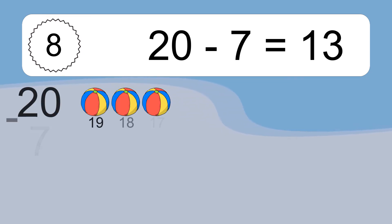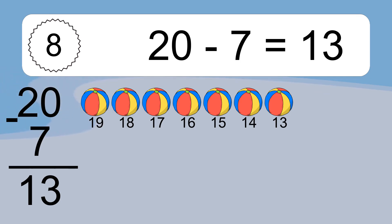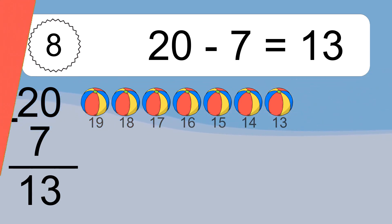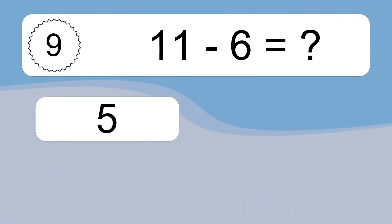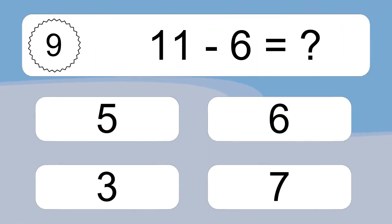20 minus 7 equals what? 20 minus 7 equals 13. Let's count it: 19, 18, 17, 16, 15, 14, 13.